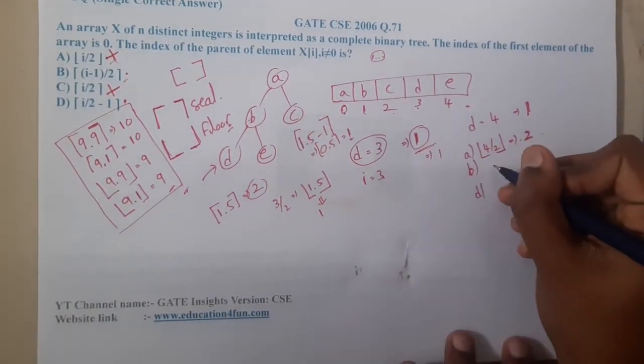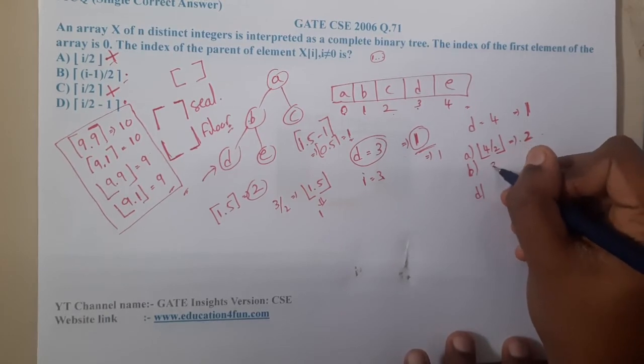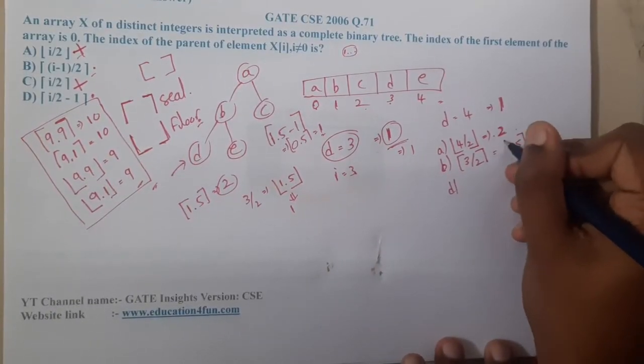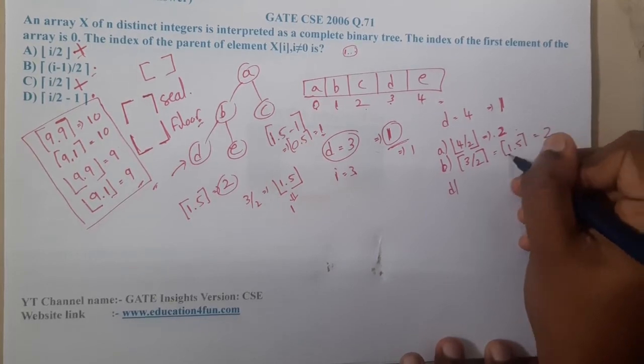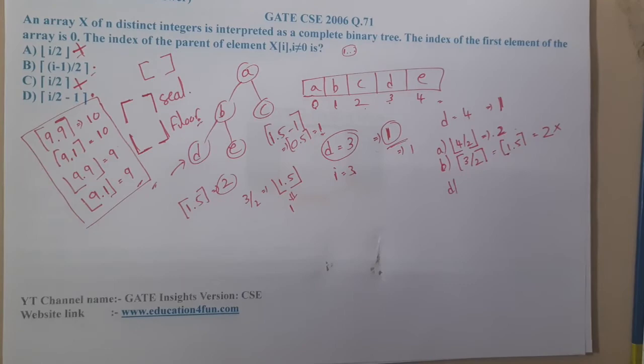Moving on to option B, which is (i minus 1), which will return 3 by 2 with the upper bound. 3 by 2 is 1.5 with the ceil value. Again you are getting 2. Hence option B is also wrong.